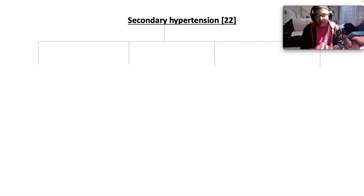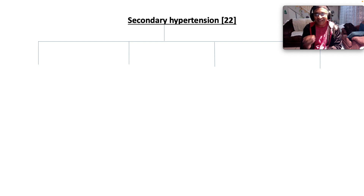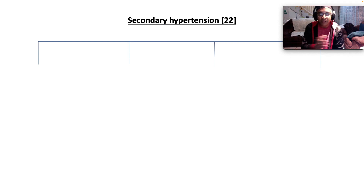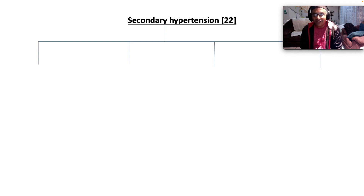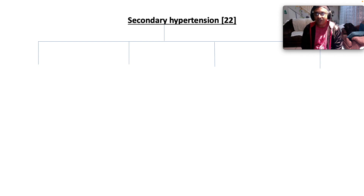So 95% of the time we don't know what causes hypertension — it's idiopathic. But 5% of the time there is an underlying secondary cause, especially in the context of a young patient with hypertension below the age of 40 years, or a patient with established hypertension at any age with very labile, difficult to control blood pressures, or very high blood pressure which was once controlled on antihypertensives and now is not. Always think about secondary hypertension in those particular clinical contexts.